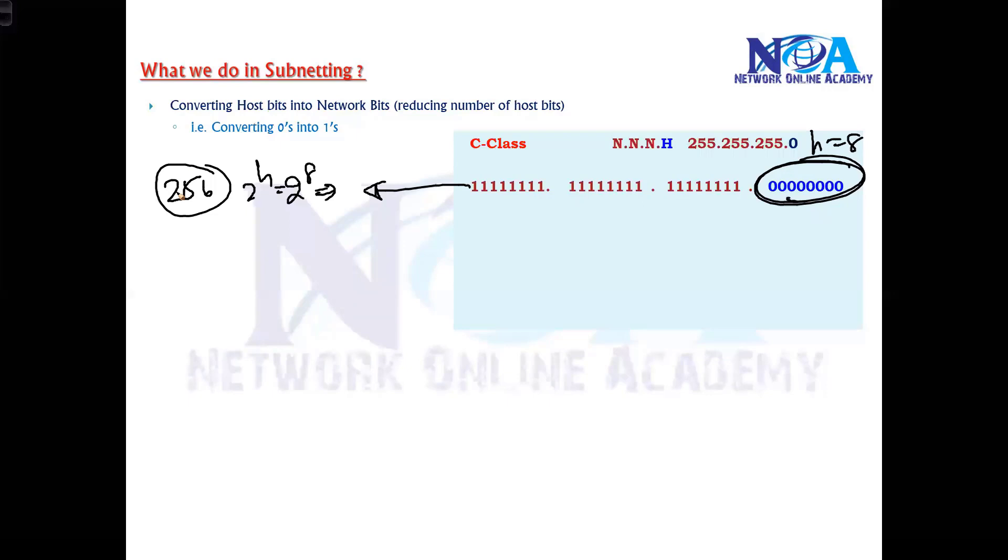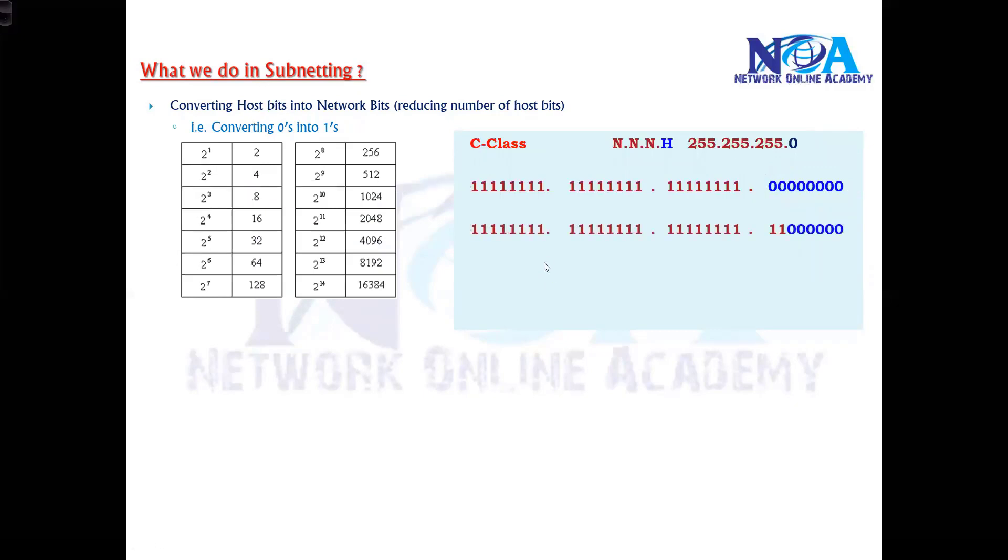If my requirement is, let's say, let me take this example here. In subnetting what we are doing is we are just converting these zeros into ones. In other words, we are reducing the number of host bits. If we take this example here, the host bits are only six now. What is the size of the network? 64.